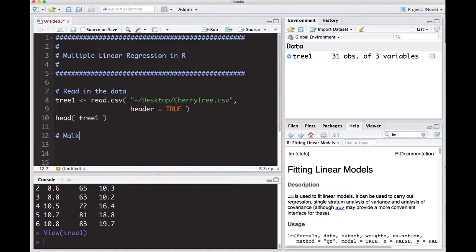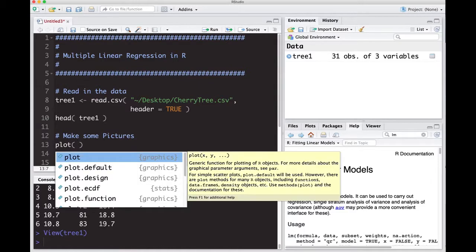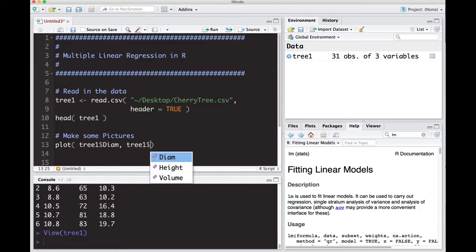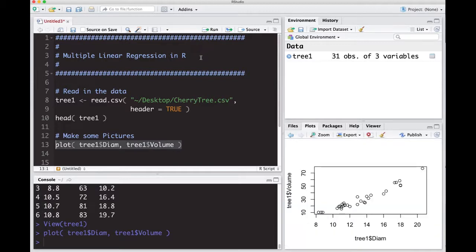Before we get too far, let's make some plots. I'm going to plot tree1$diameter and tree1$volume. Remember, volume is our dependent variable so it's the one we want on our y-axis. If I do this real quick, you can see that there is a very strong relationship between these two. Diameter looks like it might be a good predictor of volume.